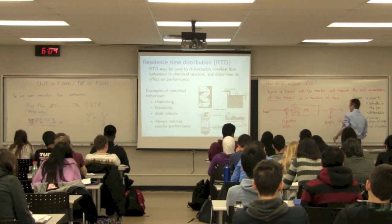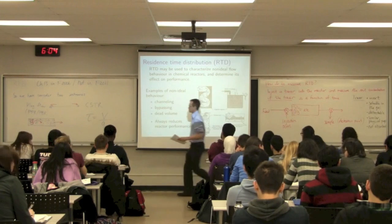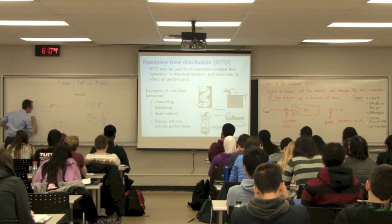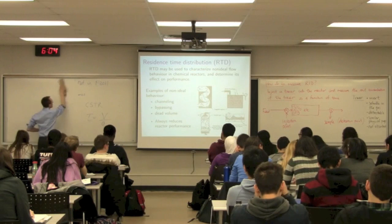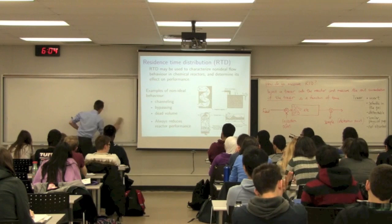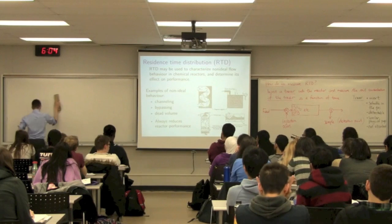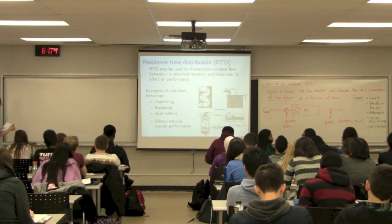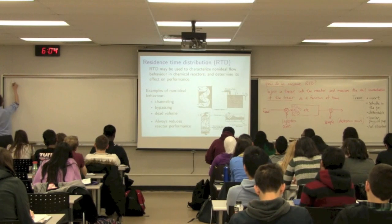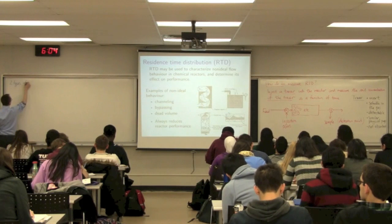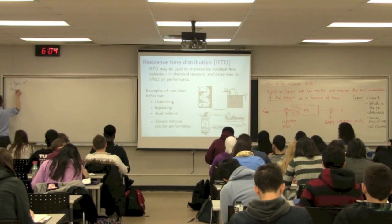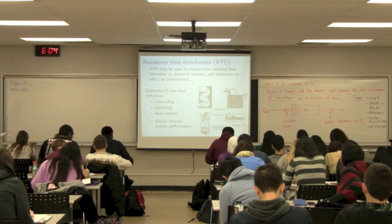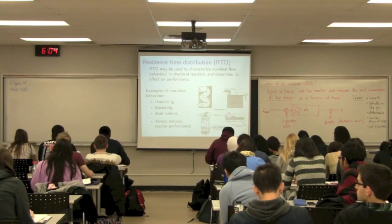Let's take a look at some plots of what tracer data, tracer output looks like. There's two ways we can do this. Two types of inputs. So two types of tracer experiments. One is called a pulse, and one is called a step.